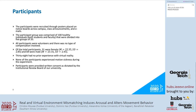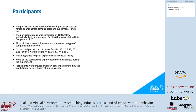Participants were recruited through posters on notice boards across campus, class announcements, and emails. All participants were volunteers with no compensation involved. Of the sample, 31 were female and 69 were male, and 38 had no prior experience with virtual reality. None of the participants experienced motion sickness during the experiment. Participants were provided written consent as dictated by the IRB of our university.